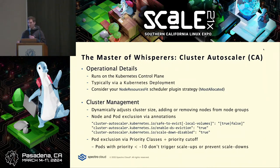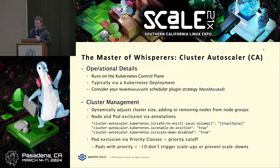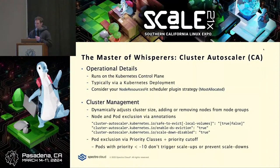There's also a pod priority cutoff — some workloads you might want Cluster Autoscaler to disregard completely. You can do that by setting a priority for those workloads beneath the cutoff, which defaults to minus 10. So you'd have a priority class like 'cluster-autoscaler-ignore' set to minus 15, and Cluster Autoscaler wouldn't scale up for those pods even if they're pending.